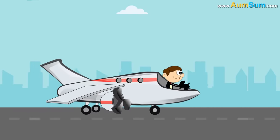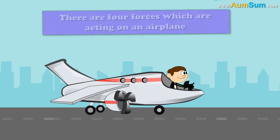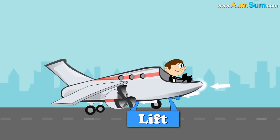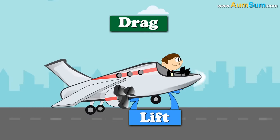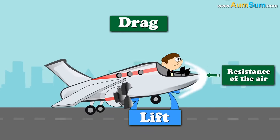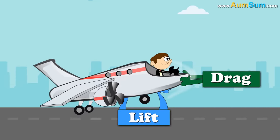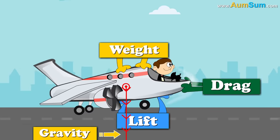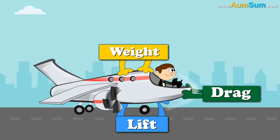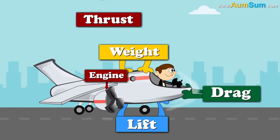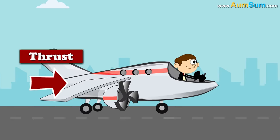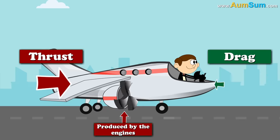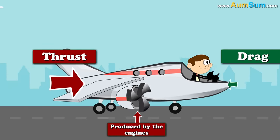Simply stated, there are four forces acting on an airplane. Lift — this force is generated because of the forward motion of the airplane through the air. Drag — this force is generated because of the resistance of the air to the forward motion of the airplane. Weight — this force is generated because of the pull of gravity towards the center of the earth. And finally, thrust — this force is generated by the engines of the airplane. When the force of thrust produced by the engines is greater than the force of drag produced due to air resistance, the airplane moves forward.